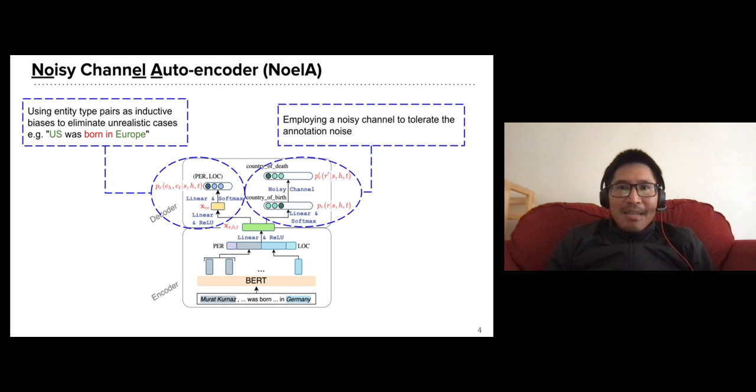To eliminate the bad effect of the annotation noise, we rely on two mechanisms. Firstly, we impose the inductive bias based on entity type pairs. This inductive bias can help the model avoid unrealistic cases, such as a place was born in another place.